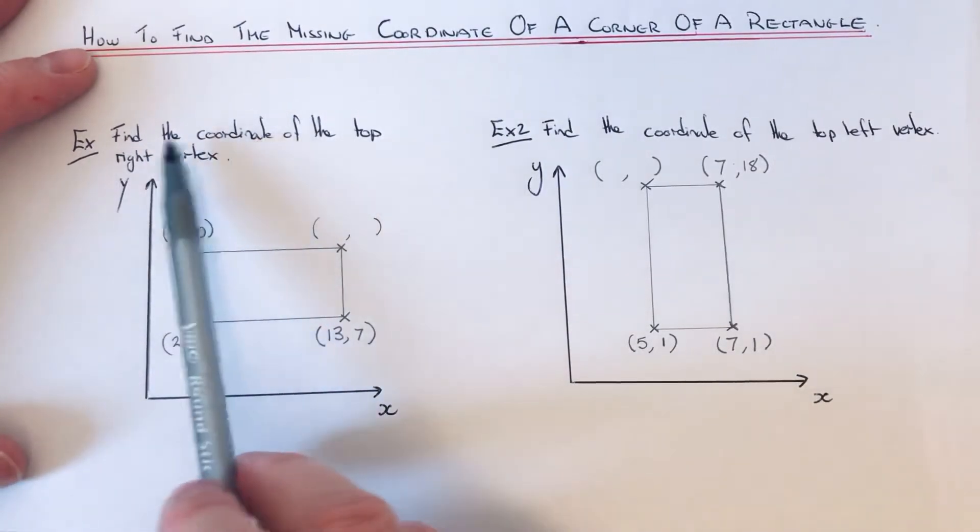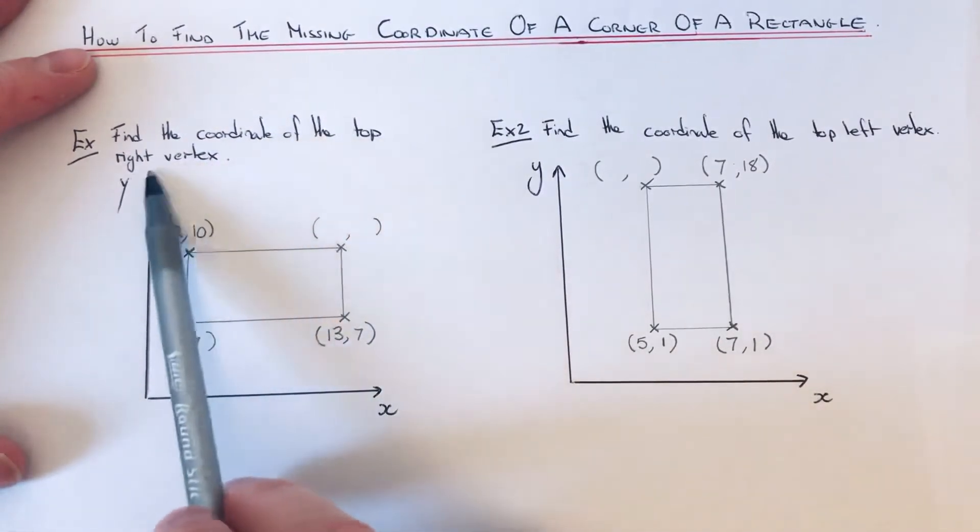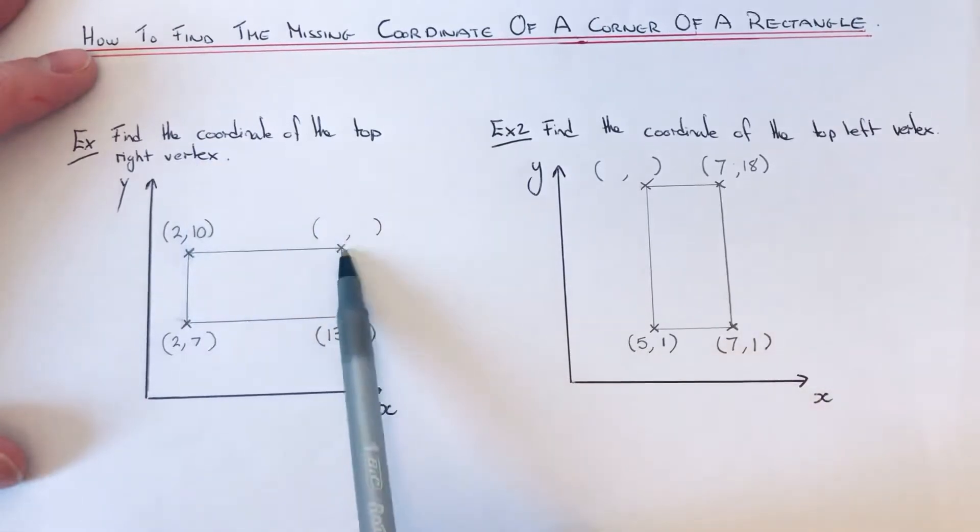Let's have a look at our first example. We need to find the corner of the top right vertex, so this corner here. What I'd recommend you do is mark the numbers on the x and y-axis first of all.